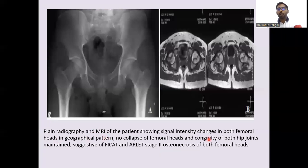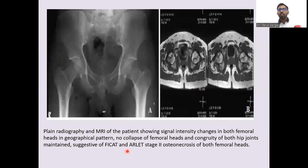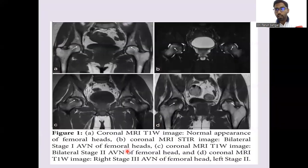Plain radiograph and MRI of a patient showing T1 signal changes in both femoral heads in a geographical pattern, with no collapse of the femoral heads and continuity of both hip joints maintained — suggestive of Ficat and Arlet Stage 2 osteonecrosis of both femoral heads.